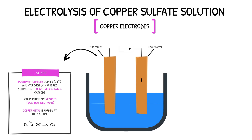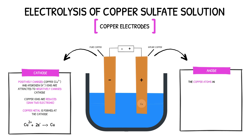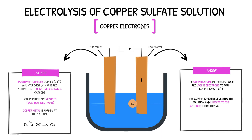The reaction at the anode is very different to that seen when graphite electrodes were used. At the anode, the copper atoms within the copper electrode lose electrons to form copper ions. These copper ions then enter the solution, where they are attracted to the cathode and reduced. The half equation at the anode would look like this — we see that the copper atoms are being oxidised, losing two electrons to form copper ions.